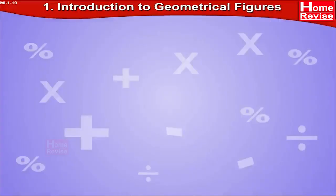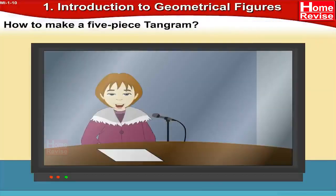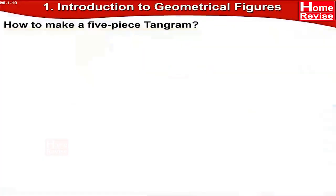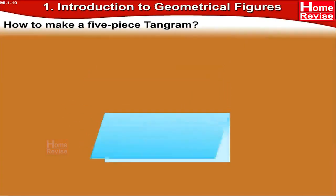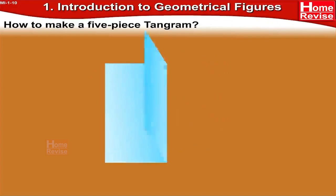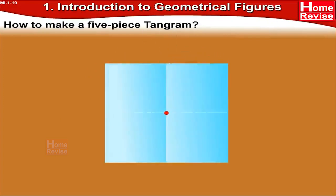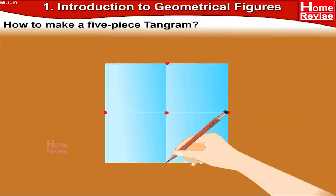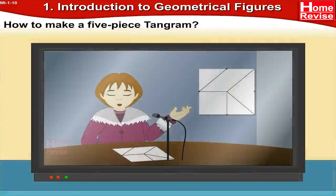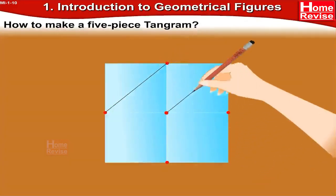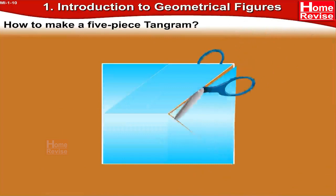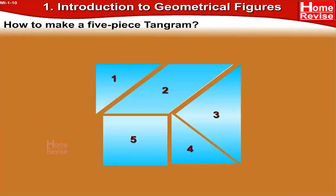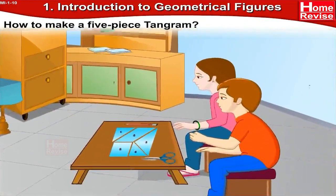Now let's have some fun — let us learn how to make a five-piece tangram. Take a square piece of paper and find the center of the paper by folding it twice. Also mark the center of all four edges. Draw lines connecting the center of the sides and the center of the square as shown in the picture. Now make five pieces of the square by cutting along the lines, but be very careful with the pair of scissors.